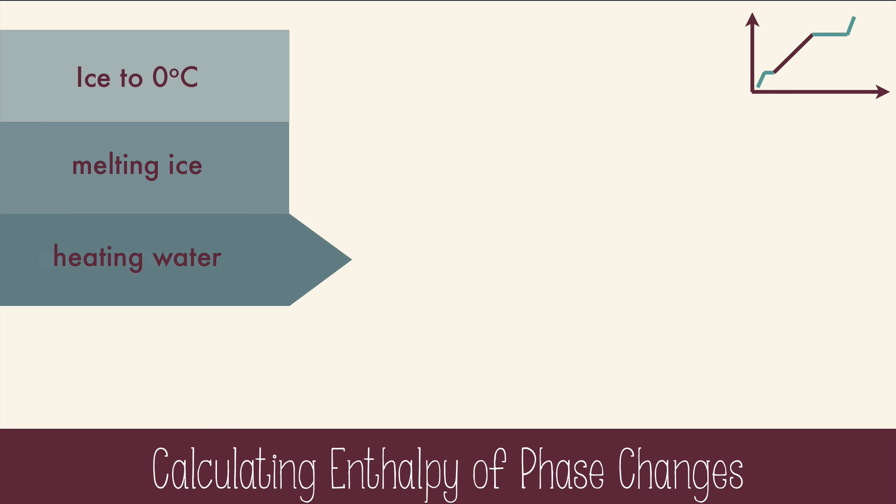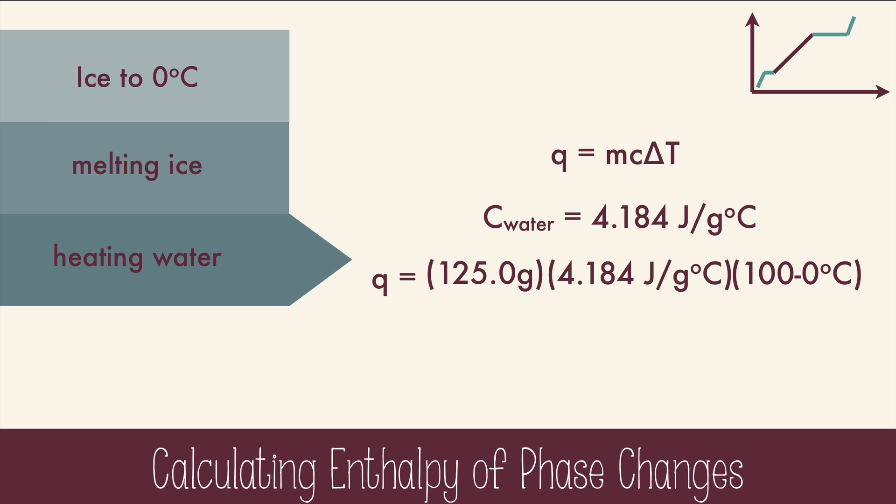Heating water involves a change in temperature. So this time we'll use Q equals MCAT and the specific heat of liquid water, 4.184 joules per gram degree Celsius. We'll plug in the mass, the specific heat, and the final temperature, which is 100 minus the initial, in this case 0, and we'll get 52,300 joules.